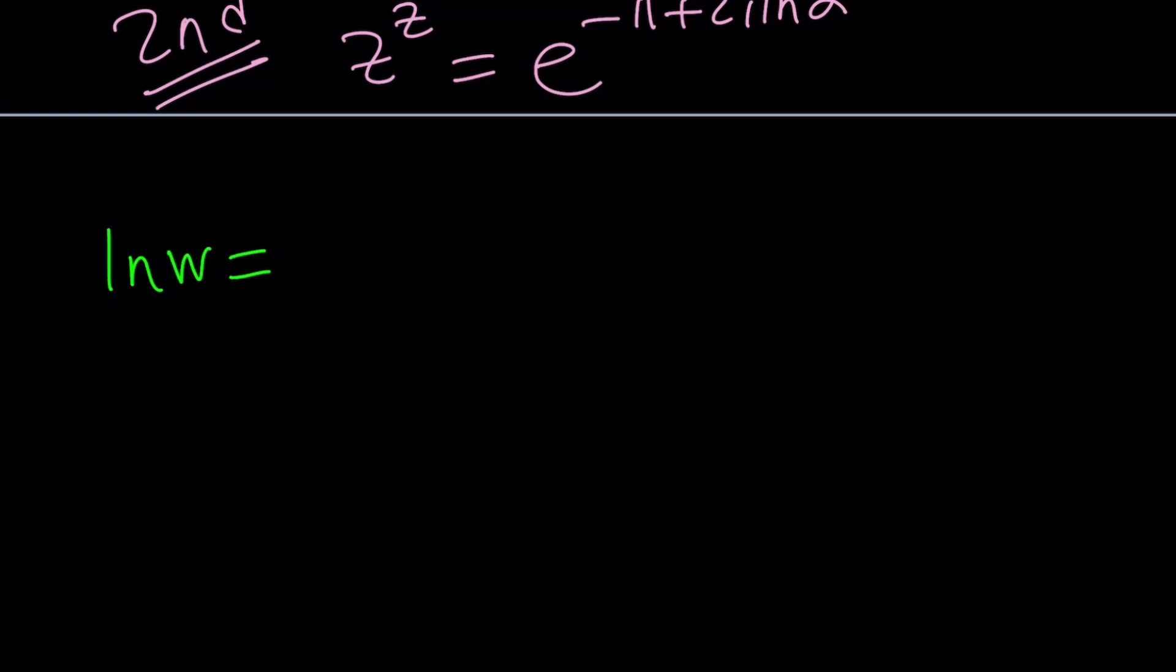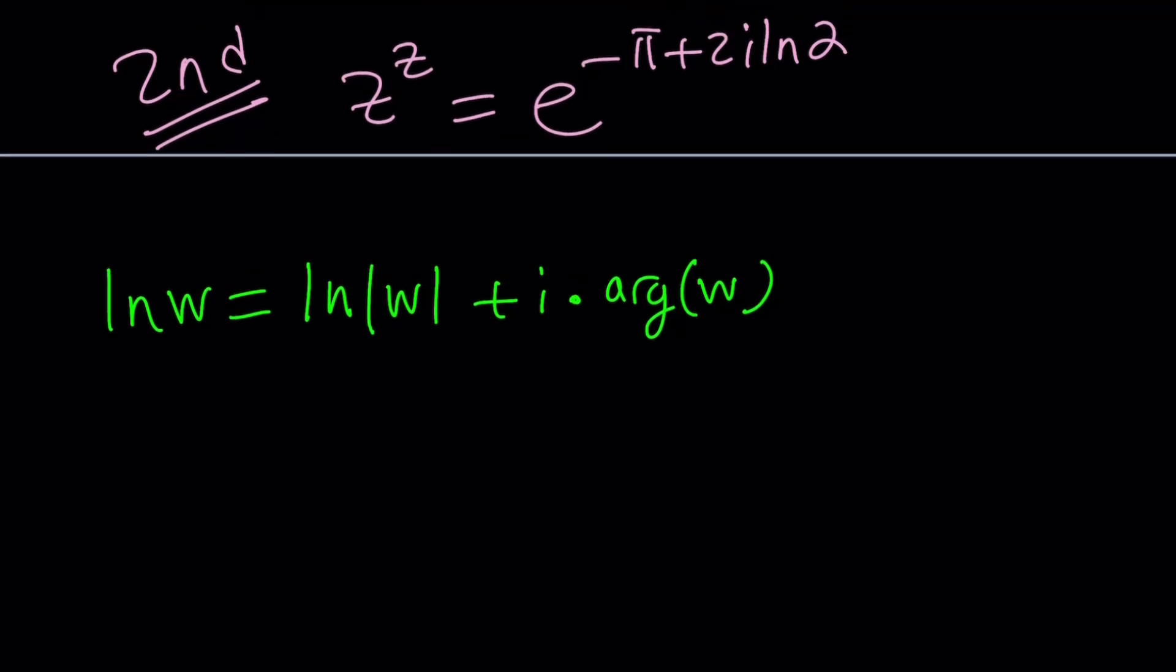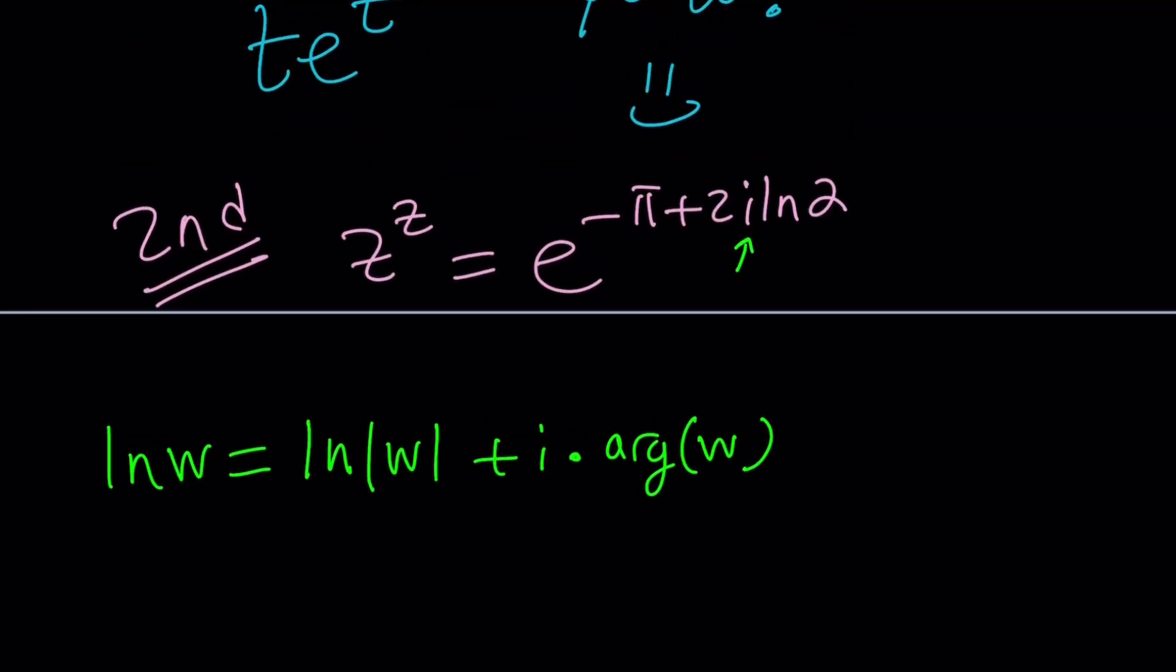ln W, where W is a complex number, is equivalent to ln of the absolute value of W plus i times the argument of W. The argument of W is multi-valued because you can add multiples of 2 pi to it. This doesn't fit our pattern because i here is not multiplied by the argument, but we're going to make it work with a little mathemagic.